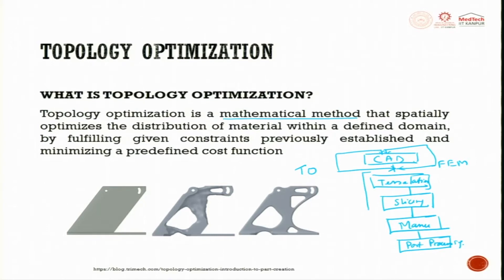Today tessellation and slicing are joined together — we directly take the CAD, do slicing, and integrate it with tessellation. The problem is there are errors in this process, so many companies are developing exclusive library functions and patch algorithms to sort those out. Topology optimization happens at the CAD stage.